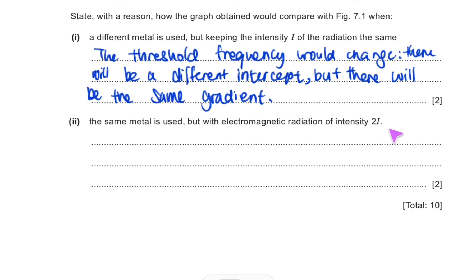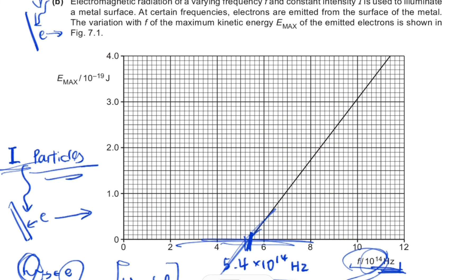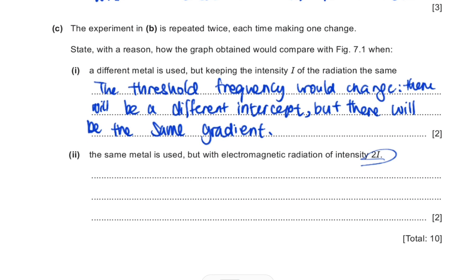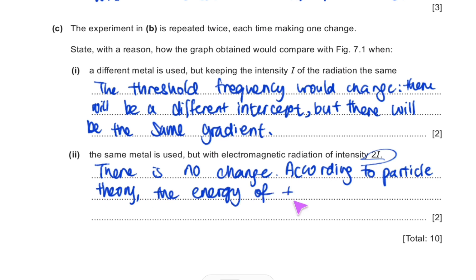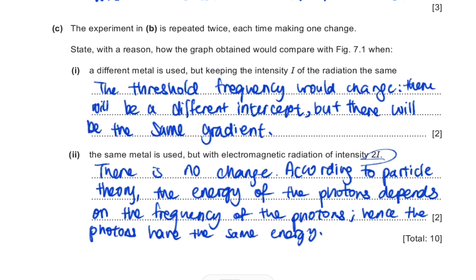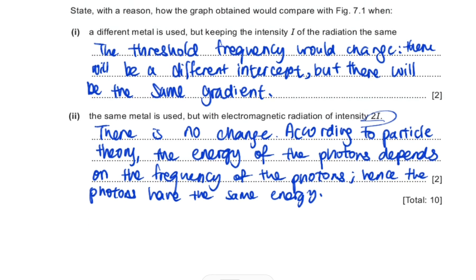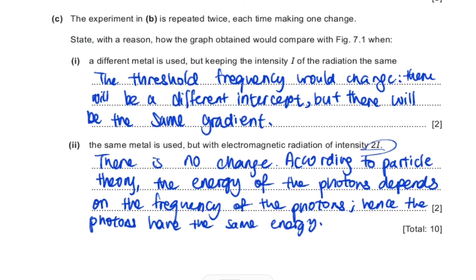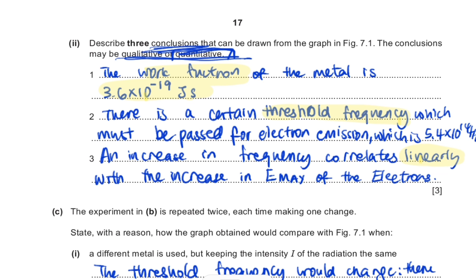The second repeat uses the same metal but with electromagnetic radiation of intensity 2I. Intensity does nothing to this graph — it may change how many electrons are emitted per second, but that is not shown here, so there is no change to the graph. The reason is that according to particle theory, the energy of the photons depends on the frequency, not the intensity. Therefore the photons have the same energy and the graph is unchanged.